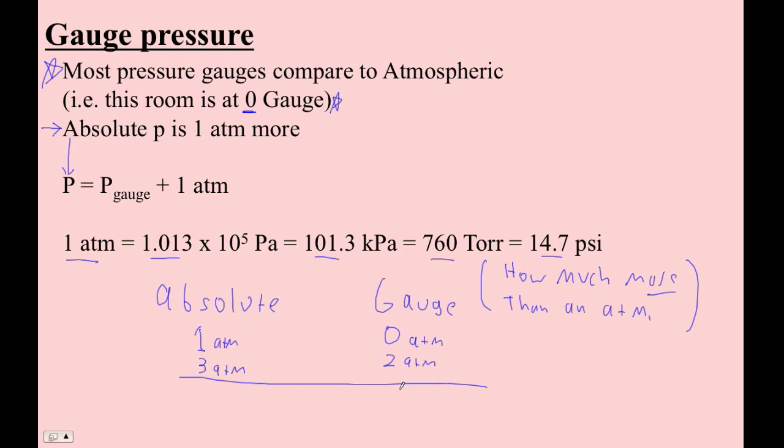What if your gauge pressure, you inflate the tires of your car to 32 psi? Well, that's, this is like higher math. That means it's 32 psi more than an atmosphere, and an atmosphere is 14.7. So 32 plus 14.7, this is higher math.